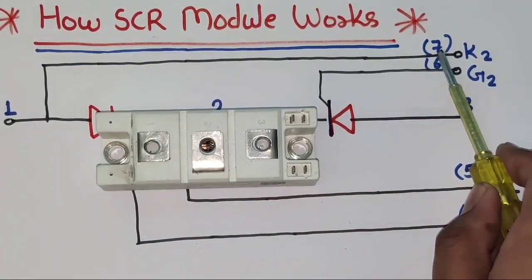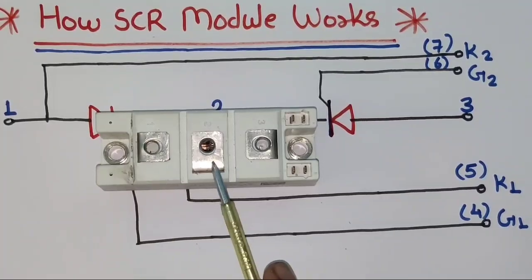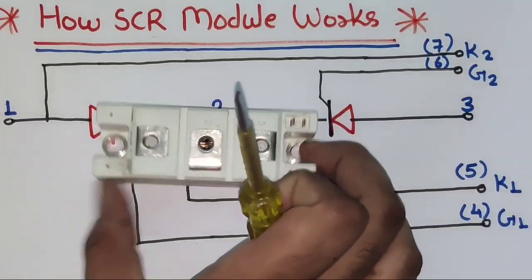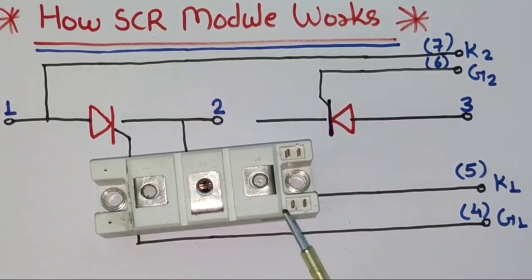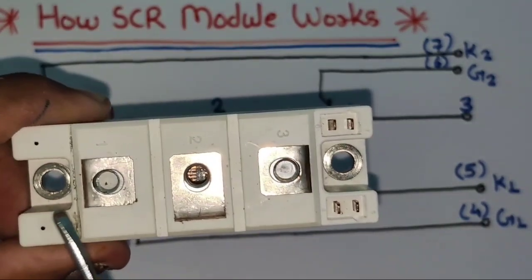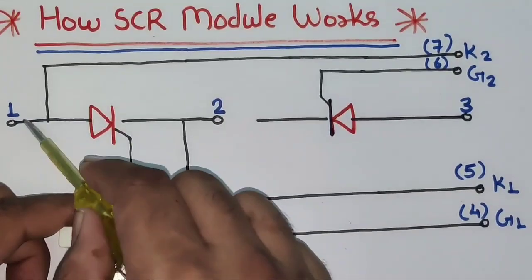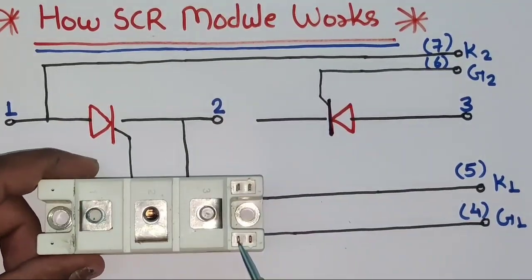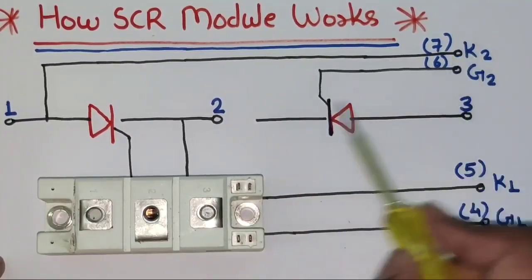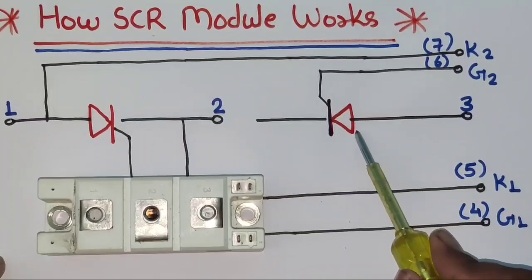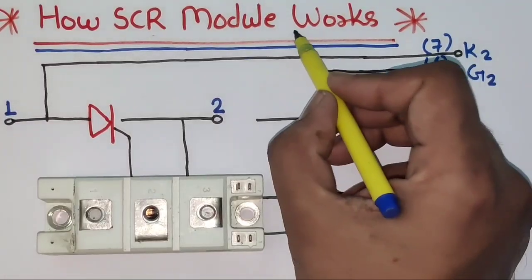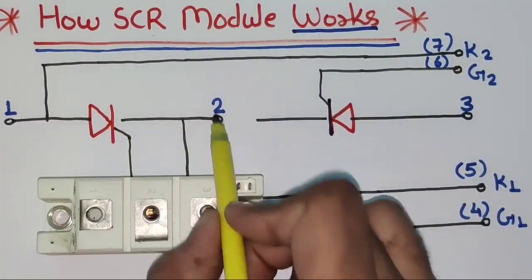In this SCR, we have a total of 7 terminals. We have terminals 1, 2, and 3 — these are the power terminals to which we connect the load. Terminals 4 and 5 are control terminals where we provide gate pulse to operate terminals 1 and 2. Between terminals 1 and 2 we connect one SCR, which operates when we provide gate pulse on 4 and 5. Terminals 6 and 7 are the gate pulse for the SCR between 1 and 3 — when we provide gate pulse between 6 and 7, conduction between 1 and 3 will start.